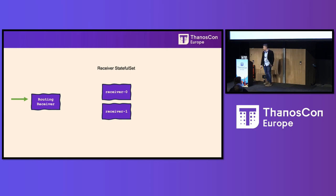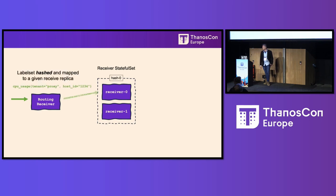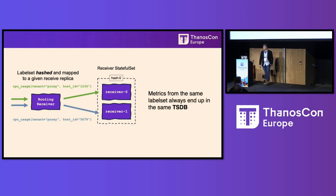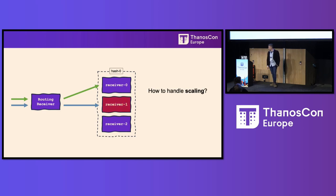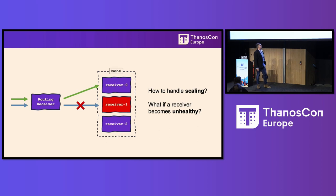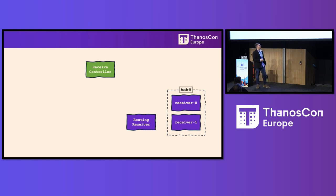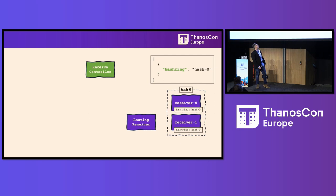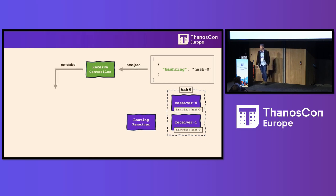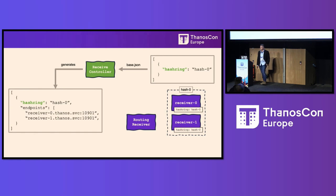The receive forms a hash ring. Label sets come in, they get hashed to certain receivers. Different label sets get hashed to different receives. We have this hash ring component which maps which series get mapped to which receive replica. We also have a receive controller — an operator that looks at our receives and monitors their health. It finds endpoints belonging to a hash label, builds the hash ring config, and feeds that into the routing receives.